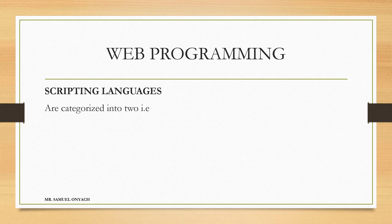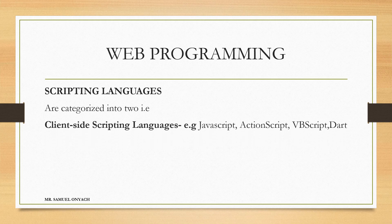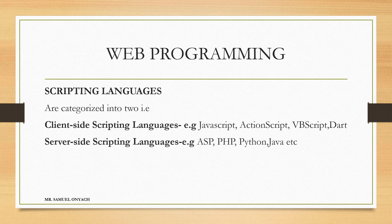Scripting languages are categorized into two: client-side scripting languages and server-side scripting languages. Examples of client-side scripting languages include JavaScript, ActionScript, VBScript, and Dart. Server-side scripting languages include ASP, PHP, Python, and Java.